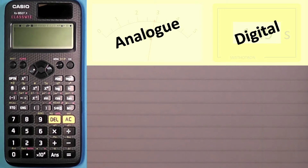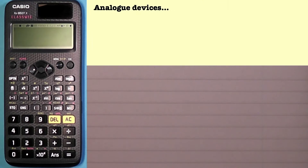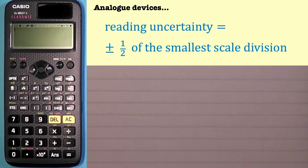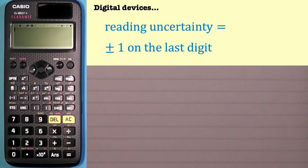It's obviously important to know whether you're dealing with an analogue or a digital device, because how you work out the reading uncertainty is different for each. For analogue devices, the reading uncertainty is taken as plus or minus one half of the smallest scale division. For a digital device, the reading uncertainty is taken as plus or minus one on the last digit.